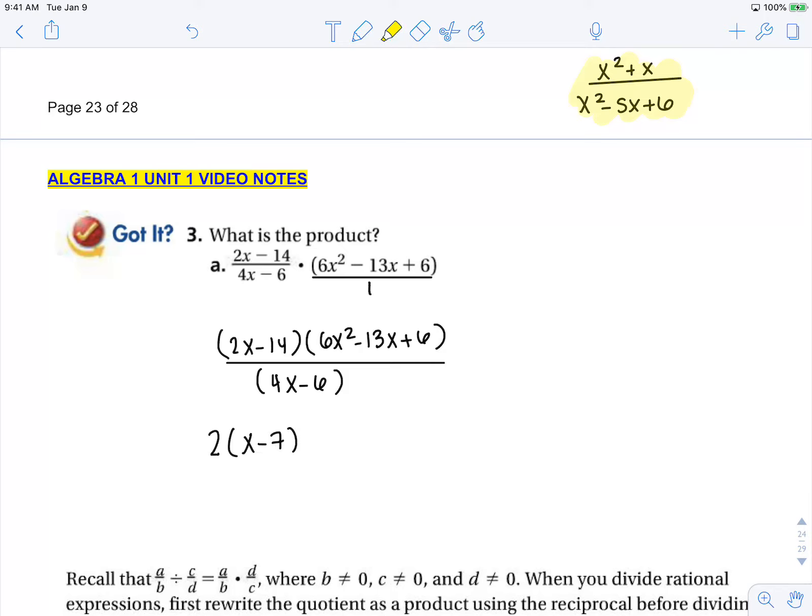Now I need to factor this trinomial by guess and check. I'm going to say 3x and 2x, and then looking ahead, this should be negative 3 and negative 2.